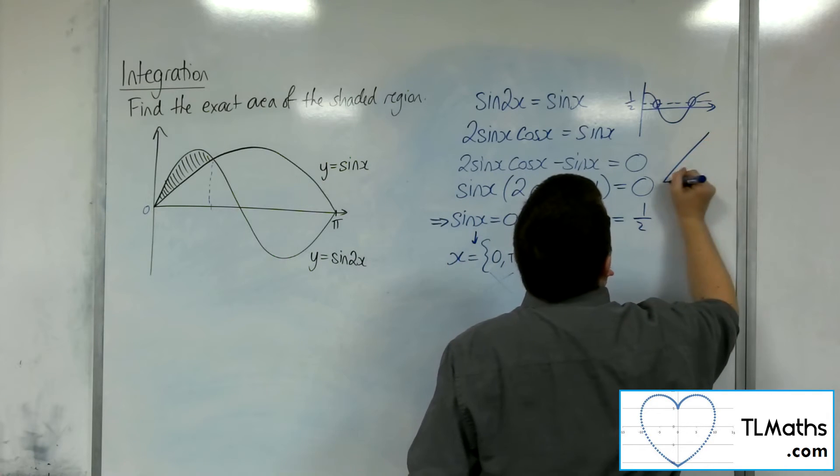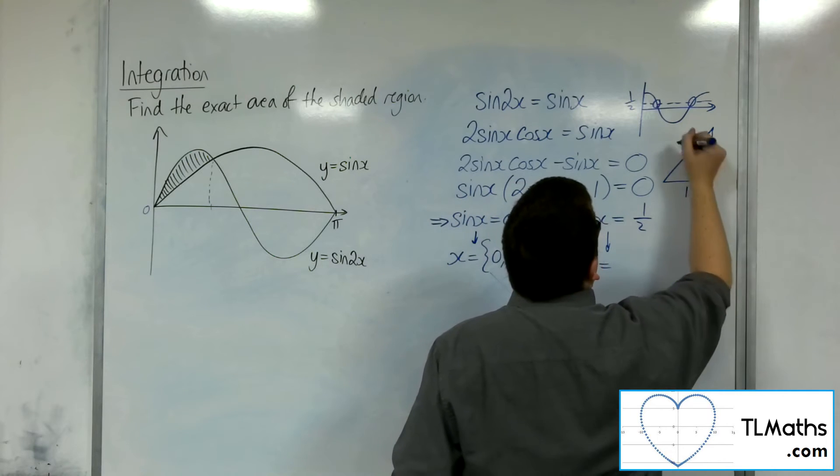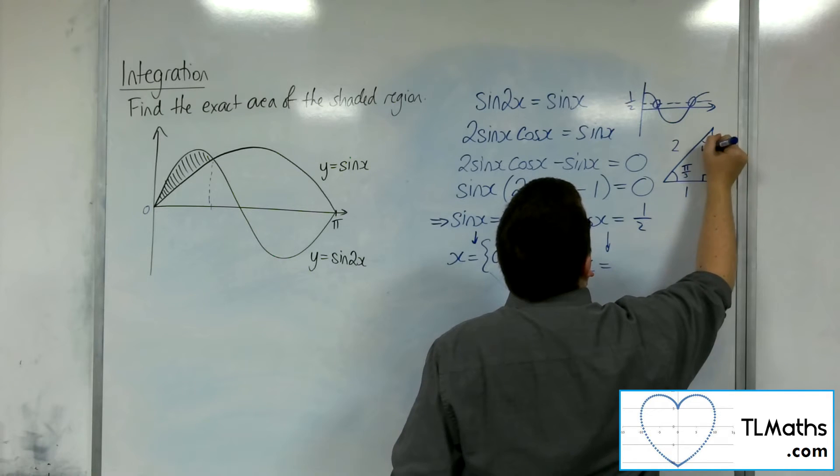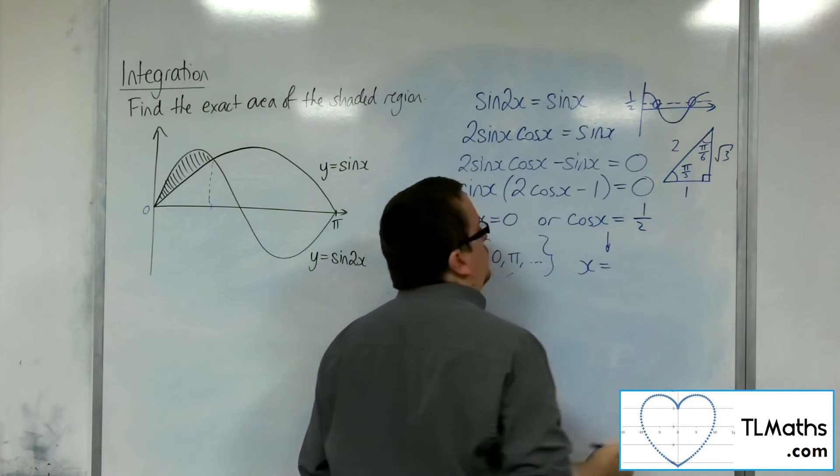So, what is cos x of 1 half? Or cos x equals 1 half. So, 1, 2, root 3. This is pi over 3. That's pi over 6. OK. The triangle that we need to remember. Or if, obviously, you can do inverse cos of 1 half on your calculator.